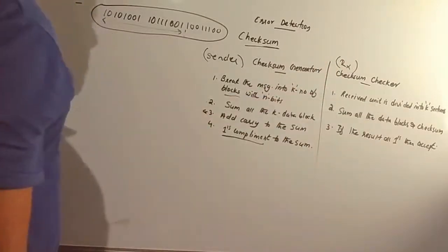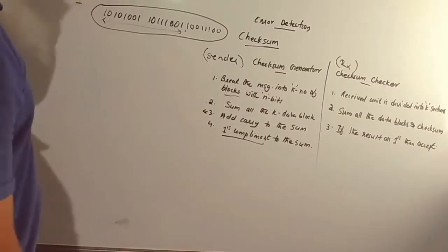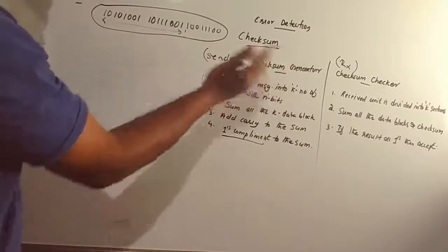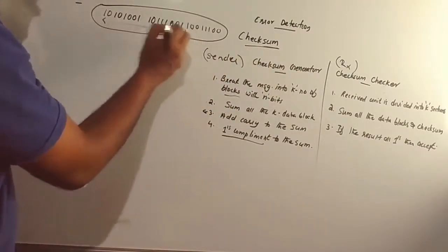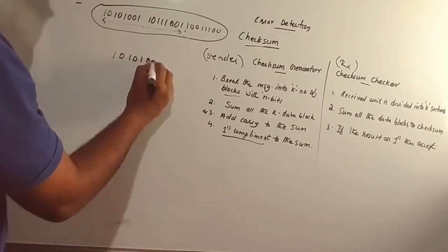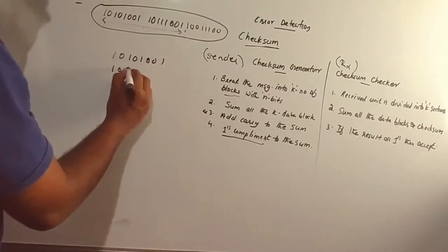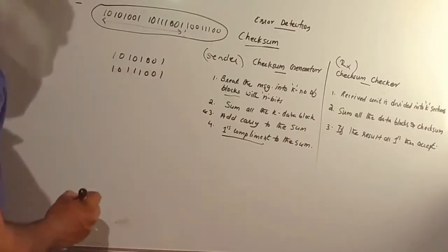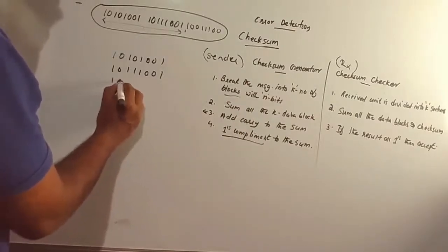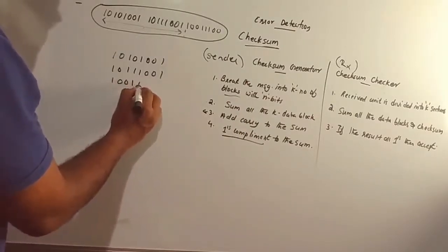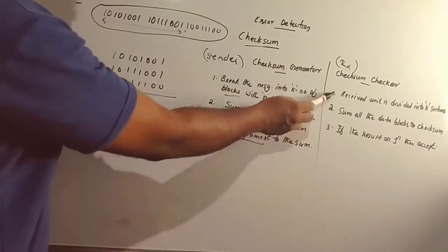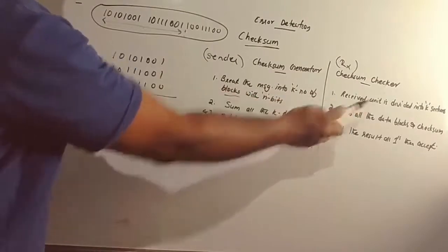At the receiver side, we divide the received units into K number of blocks. We can divide the received message and include the checksum. Here we divide: 10111001 is one block, and we also include the checksum block.